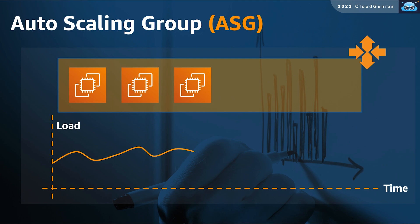Auto Scaling Group is another compute service from AWS to help you achieve elasticity and apply horizontal scaling. The demand or load for this workload is currently being served by a group of three identical servers. Right now everything is under control, but load can change over time. As you can see, the load has increased, and the total combined compute power offered by the three servers is unable to match the load. We need to take action quickly before customers start suffering from performance degradation.